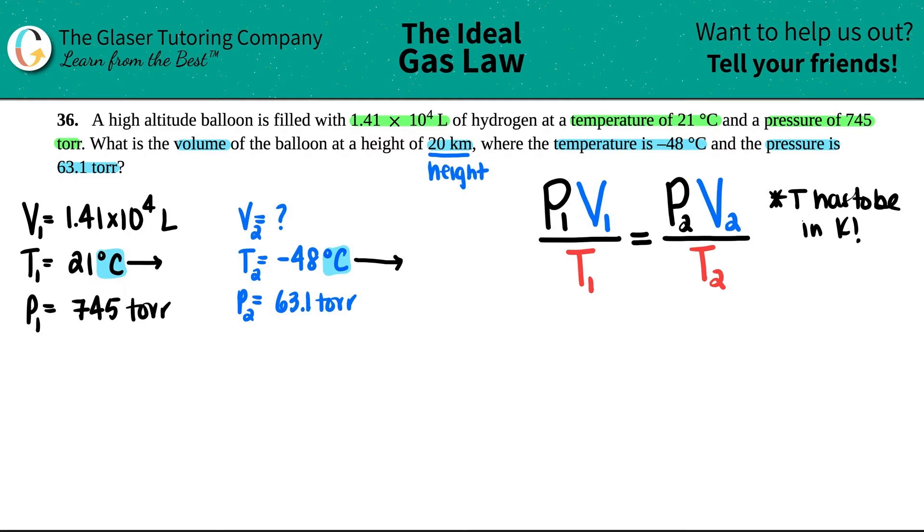We know how to do that. You can just plus 273, you can plus 273.15, but in this case I think 273 is good enough. So 21 plus 273, I get 294 Kelvin. And then negative 48 plus 273, I get 225 Kelvin.